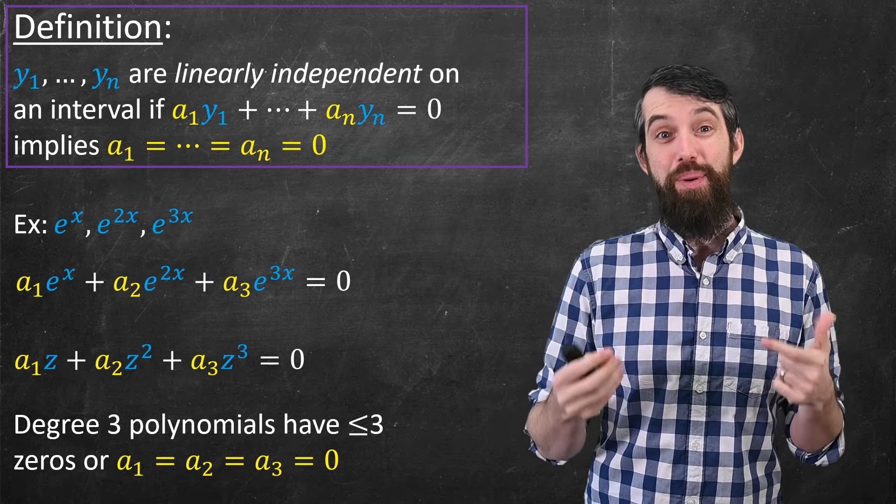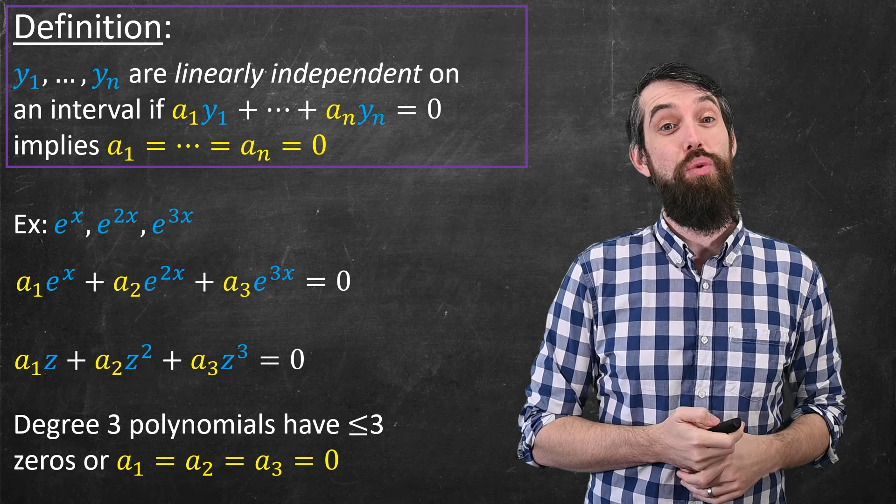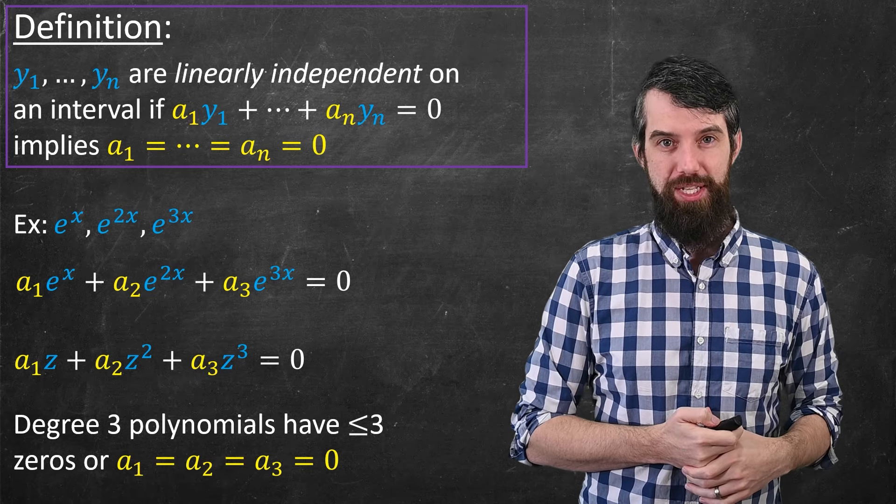So this is all fine, but I really want a more systematic way to do it versus an ad hoc method. And for that, we turn to a new piece of mathematics called the Wronskian.